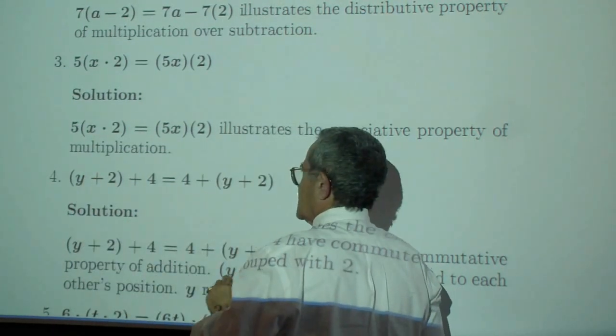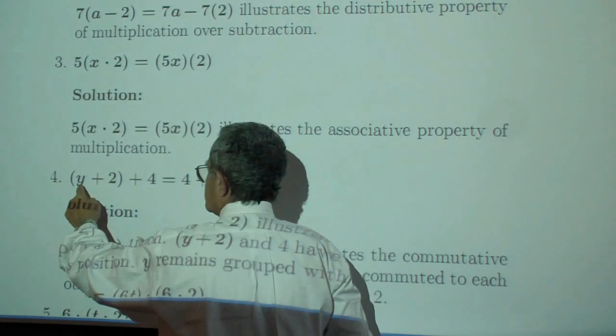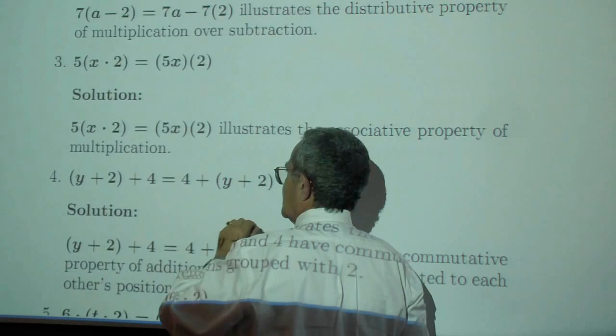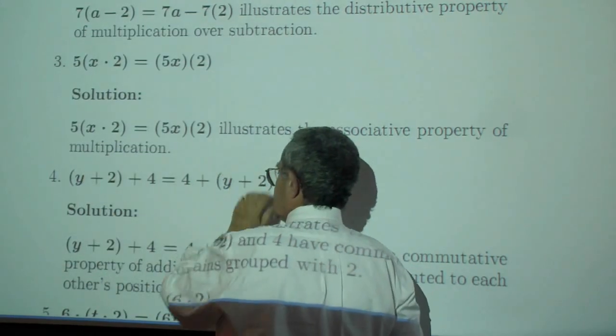So this entire number, suppose that was a one. One plus two is three, three plus four is seven. Four plus three. This number is the same as that number.